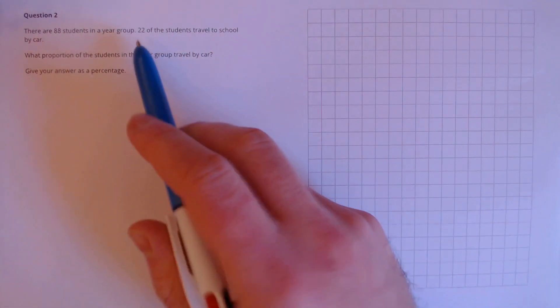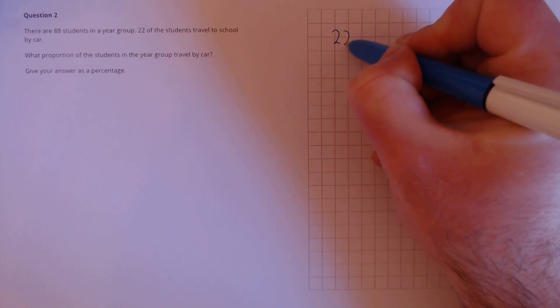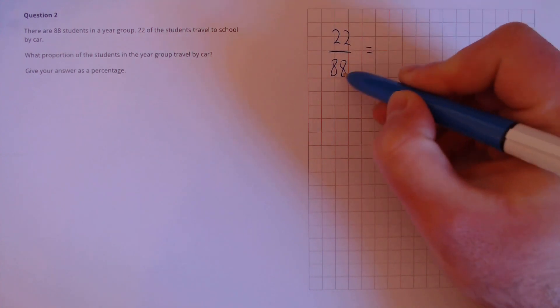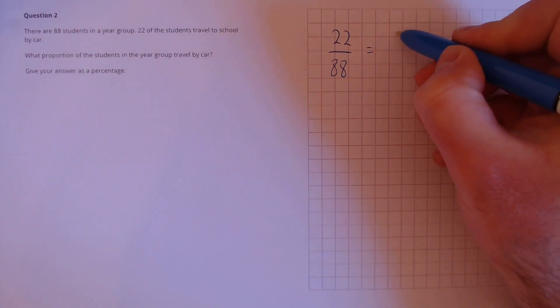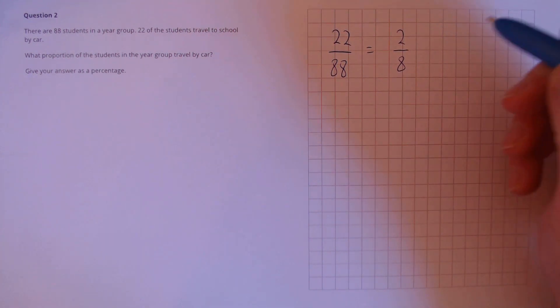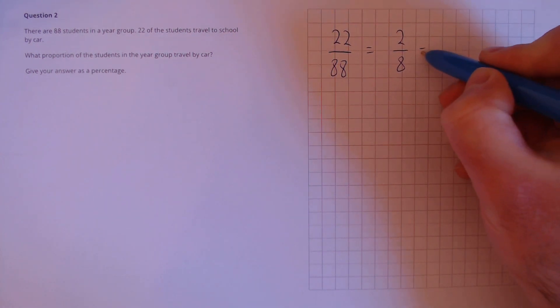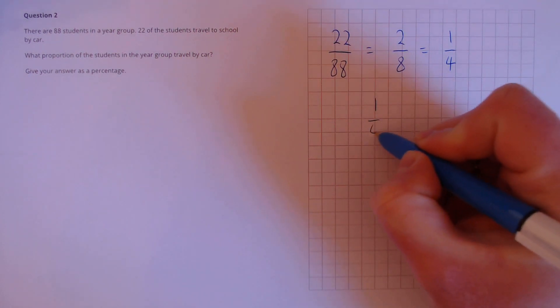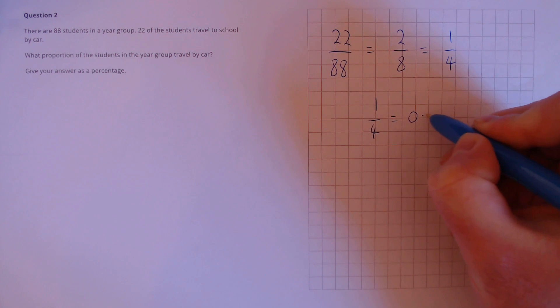So the proportion is 22 divided by the total, 88. First let's simplify that. We see both of these can be divided by 11 to give 2 over 8. Next let's simplify that further. We can divide by 2 to get a quarter. We know that a quarter is the same as 0.25.